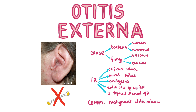Otitis externa is a clinical diagnosis; however, consider taking an ear swab to determine the causative organism if medical management fails, the condition is severe, or if otitis externa is recurrent or chronic. First-line management for acute otitis externa is microsuction of debris in the ear canal and simple analgesia like paracetamol or ibuprofen. If this is insufficient, consider prescribing a topical antibiotic like acetic acid 2% spray with or without a topical corticosteroid for at least seven days.